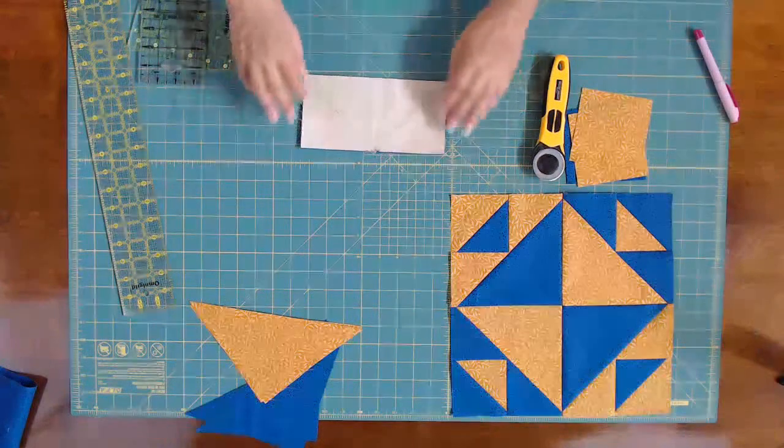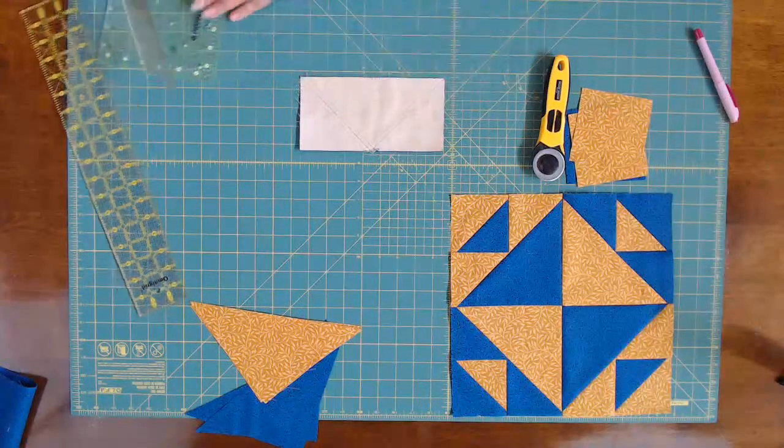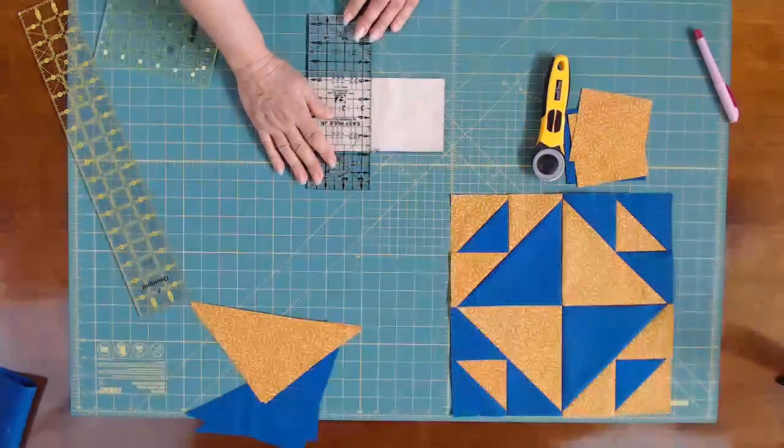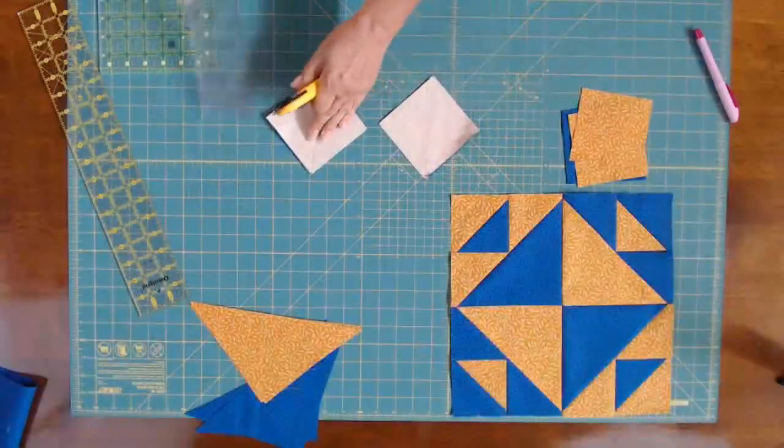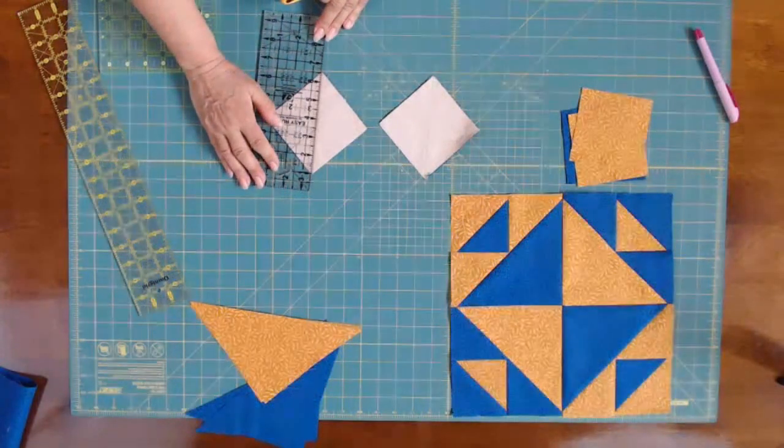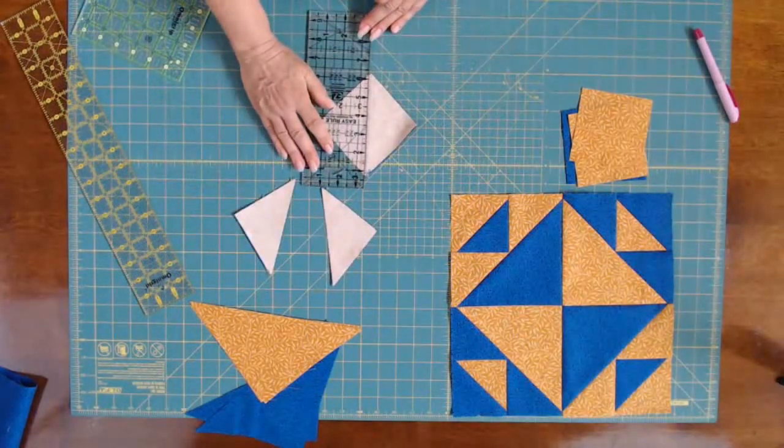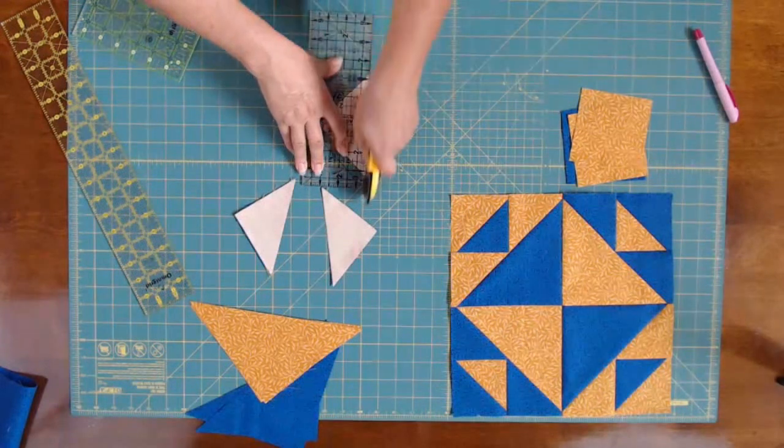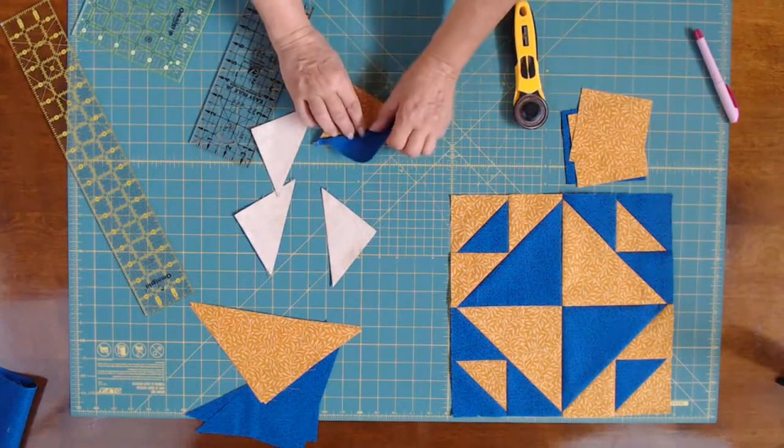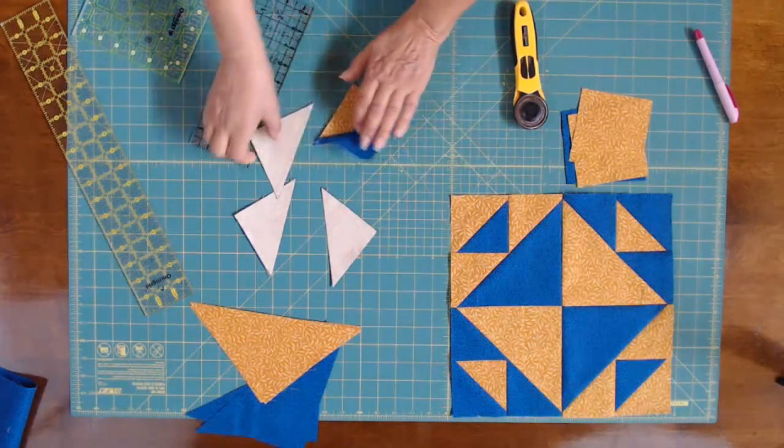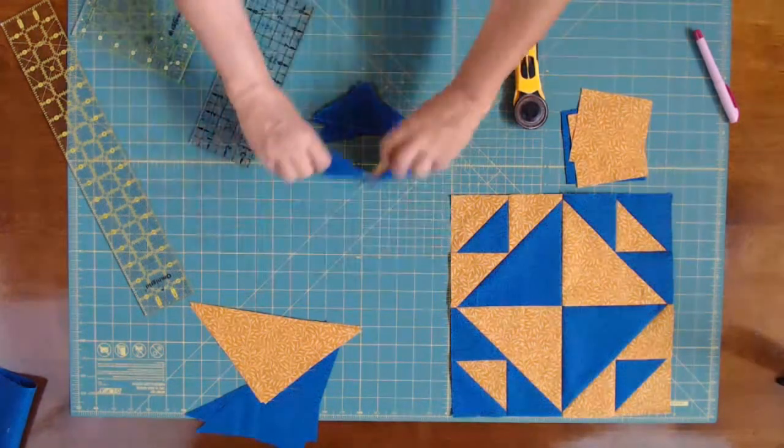Okay, so I have sewed a scant quarter inch on each side of my lines and now I'm ready to cut it apart. So directly in half, I will cut it in half. And now I have two squares and then cut on the diagonal line. And there, I now have four half square triangles. And what I'll do is I'll take this to the iron and I will press to the dark side on all of these.